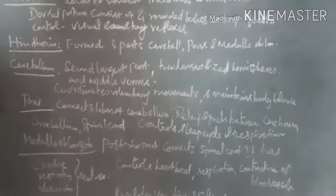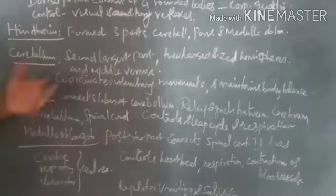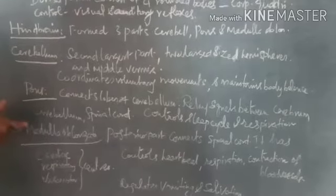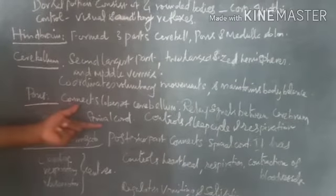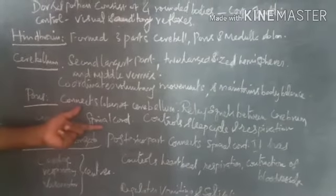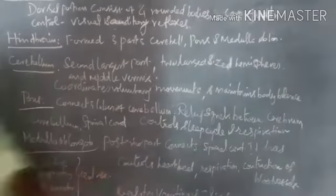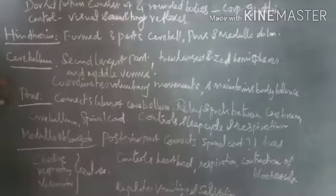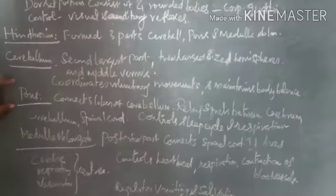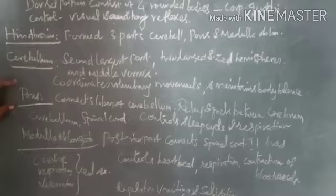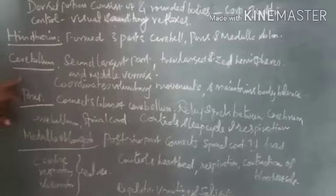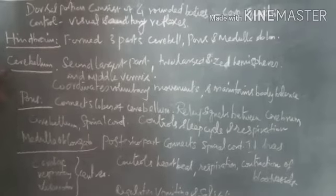The pons connects the two lobes of the cerebellum. It relays signals between the cerebrum, cerebellum, and spinal cord. It also controls the sleep cycle and respiration.